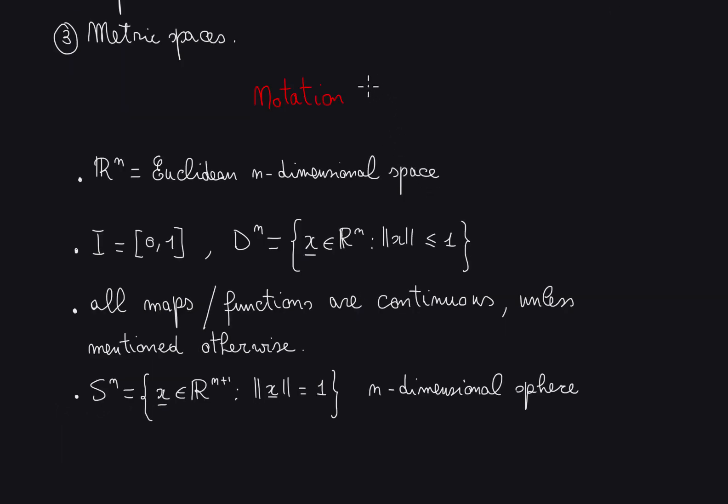The common notation we will be using: Rn, with this blackboard character for R, will be the Euclidean n-dimensional space.